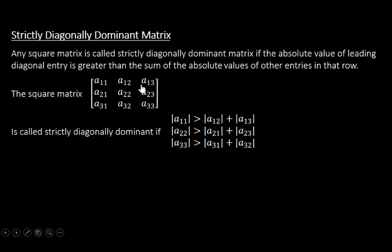It means the absolute value of a11 should be greater than the sum of the absolute values of a12 and a13. Similarly, the absolute value of the leading diagonal entry of the second row, a22, should be greater than the sum of the absolute values of a21 and a23. Similarly, the absolute value of a33 should be greater than the sum of the absolute values of a31 and a32. If any square matrix satisfies this condition, we call it a strictly diagonally dominant matrix.